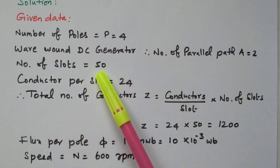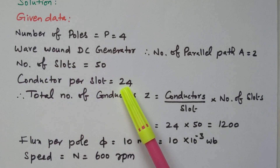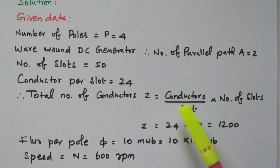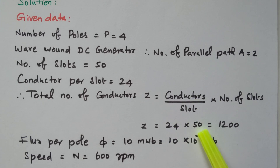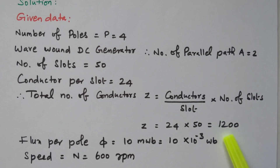The number of slots is 50, and conductors per slot is 24, so 24 conductors are available in each and every slot. The total number of conductors Z equals conductors per slot multiplied by number of slots — that is 24 into 50 — equals 1200. So the number of conductors is 1200, calculated from conductors per slot into number of slots.